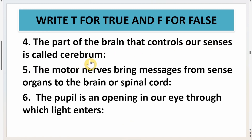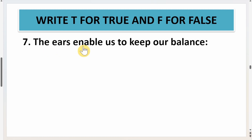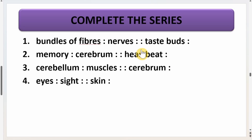Fourth: the part of the brain that controls our senses is called the cerebrum — true. Fifth: the motor nerves bring messages from sense organs to the brain or spinal cord — that is false, write F. Sixth: the pupil is an opening in our eye through which light enters — true. Seventh: the ears enable us to keep our balance — true. Along with hearing, the ears also help us keep our balance.